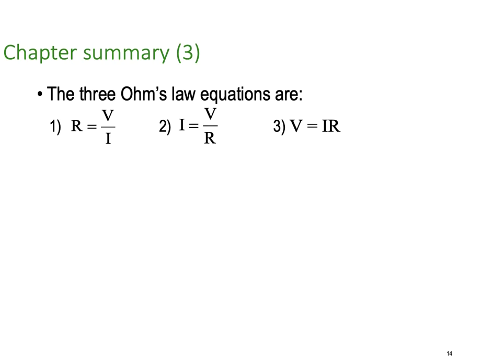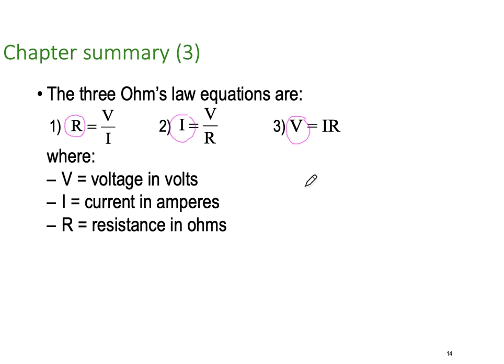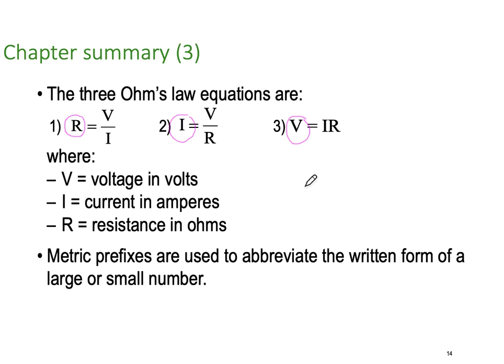So how do we represent that physics? There are three Ohm's law equations. And we have an Ohm's law equation for resistance and that's just makes resistance the subject of the equation. Ohm's law for current and then Ohm's law for voltage. Where V is volts in volts, I is current in amperes and R is resistance in Ohms.